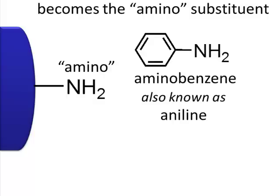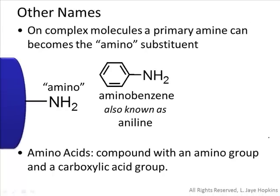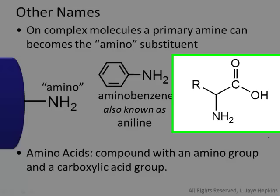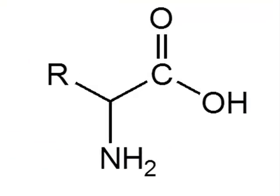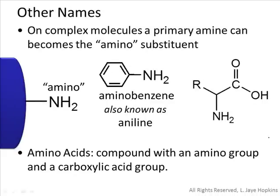Amino acids are organic molecules that contain both a carboxylic acid functional group and the amino substituent, giving them a general structure with an R group. Famous amino acids like cysteine and tryptophan share this same basic structure with differences in their R groups. When we hear the term 'amino,' we're referring to an amine used as a substituent in the name rather than the backbone.